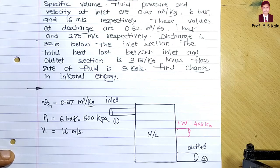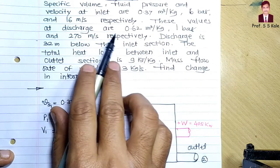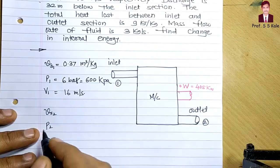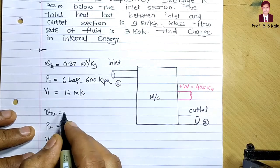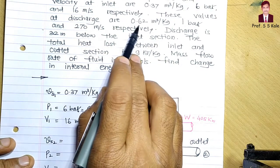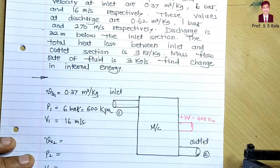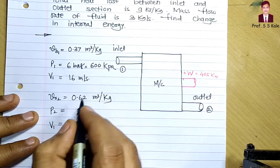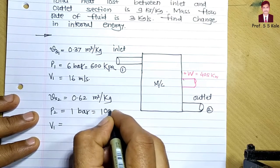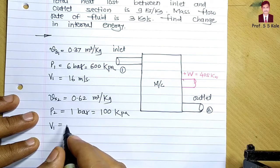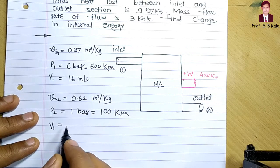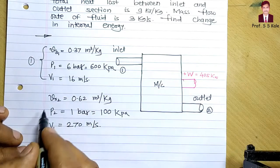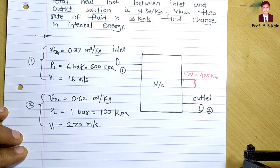The values at discharge (outlet) are: specific volume vs2 = 0.62 m³/kg, pressure P2 = 1 bar, and velocity V2 = 270 m/s. Converting P2 to kilo Pascal: 1 × 100 = 100 kPa. These are the outlet data, so we use suffix 2 for all outlet quantities.